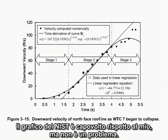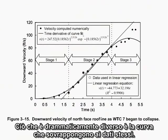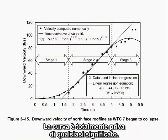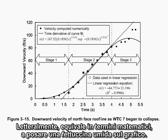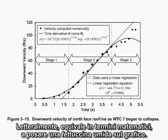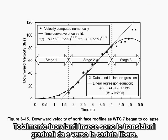NIST's graph is upside down relative to mine, but that's really not an issue — their data is almost the same. What is dramatically different is the curve they superimpose on the data. This curve has no physical significance whatsoever; it is merely a hypothetical interpretation of the data. It is literally the mathematical equivalent of laying a wet noodle on the graph and nudging it around until it fits the data. The straight part fits the data reasonably well, but what is totally misleading are the gradual transitions into and out of freefall.